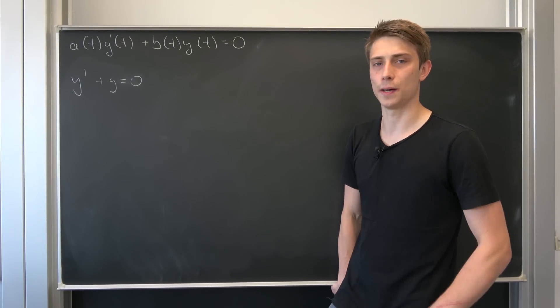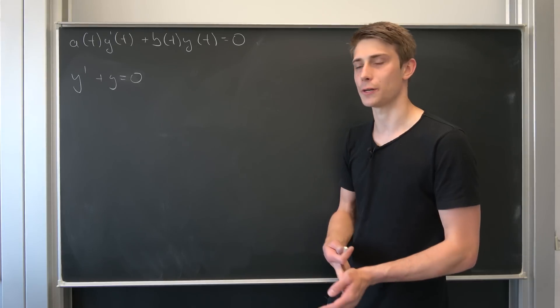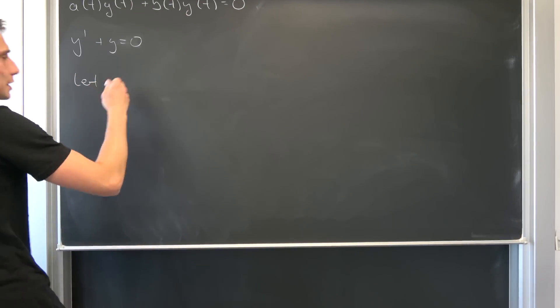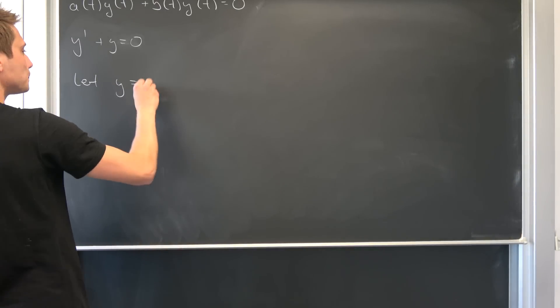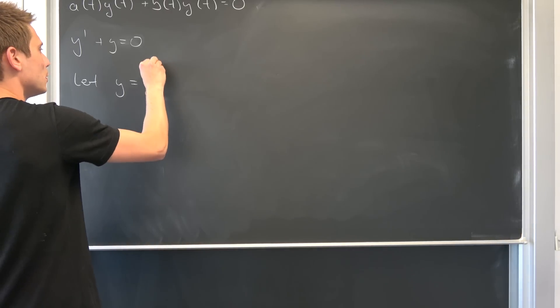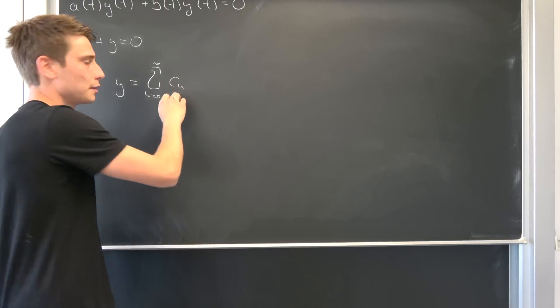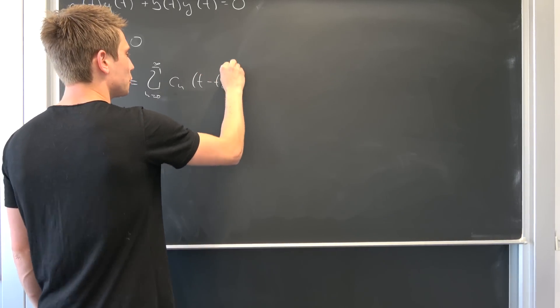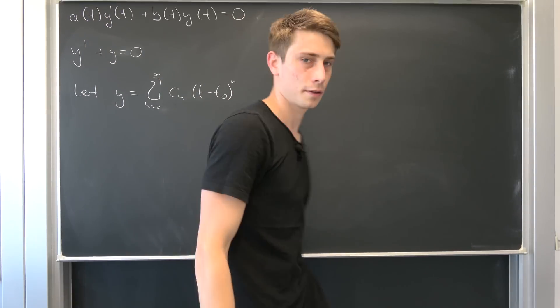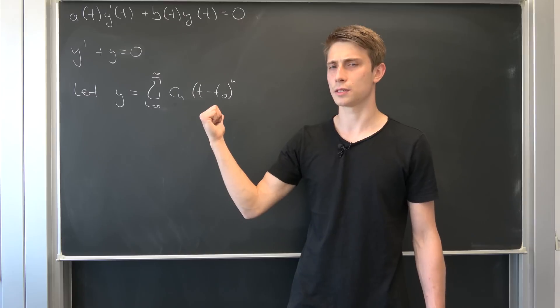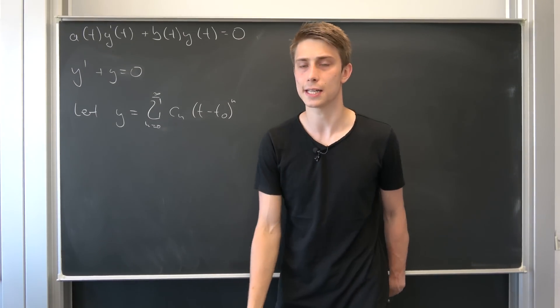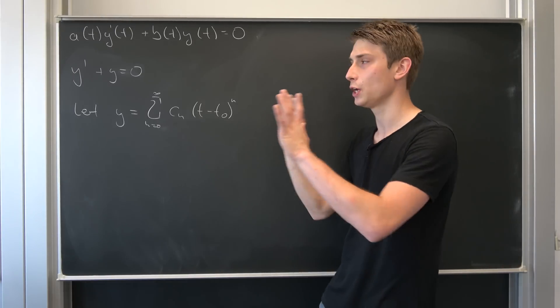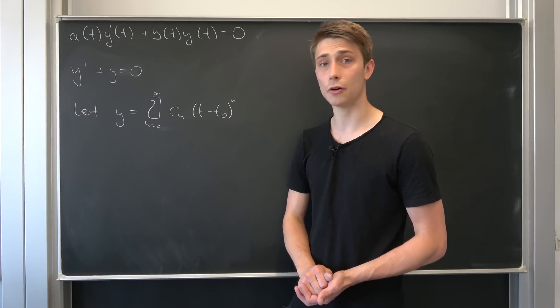I want you guys to remember what a series representation of a function looks like in general. So those are in terms of t, so that also means we want to let our y be equal to some infinity sum from n equals 0 to infinity of some sequence, undetermined coefficient, times t minus t0 to the nth power.